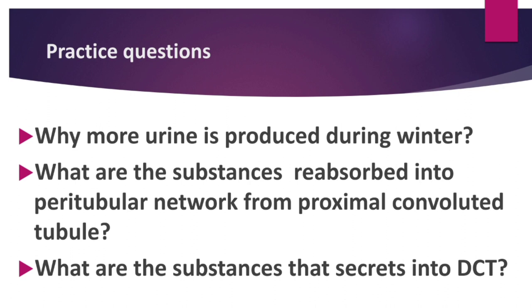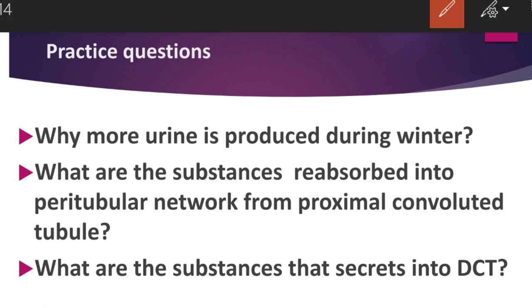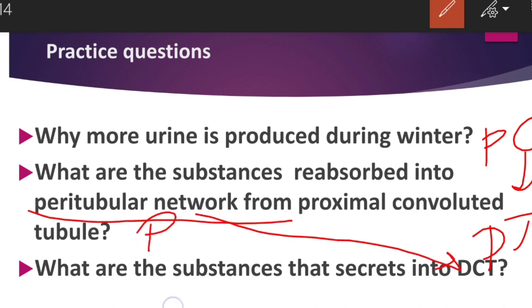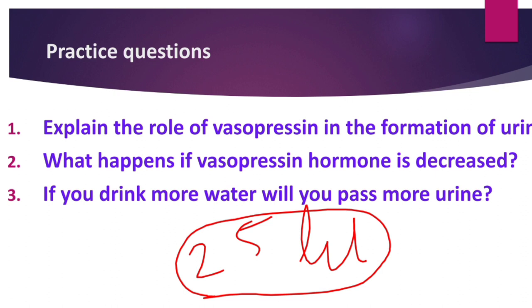What are the substances reabsorbed in the peritubular network from the proximal convoluted tubule? Reabsorption takes place in the second step. Amino acids, glucose, vitamin C, potassium, calcium, sodium, chlorides, and 75 percent of water are reabsorbed from the PCT into the peritubular network. The substances secreted include excess waste materials like urea, uric acid, creatinine, salt ions such as potassium and sodium, and H⁺ ions. This maintains the proper pH concentration of urine.